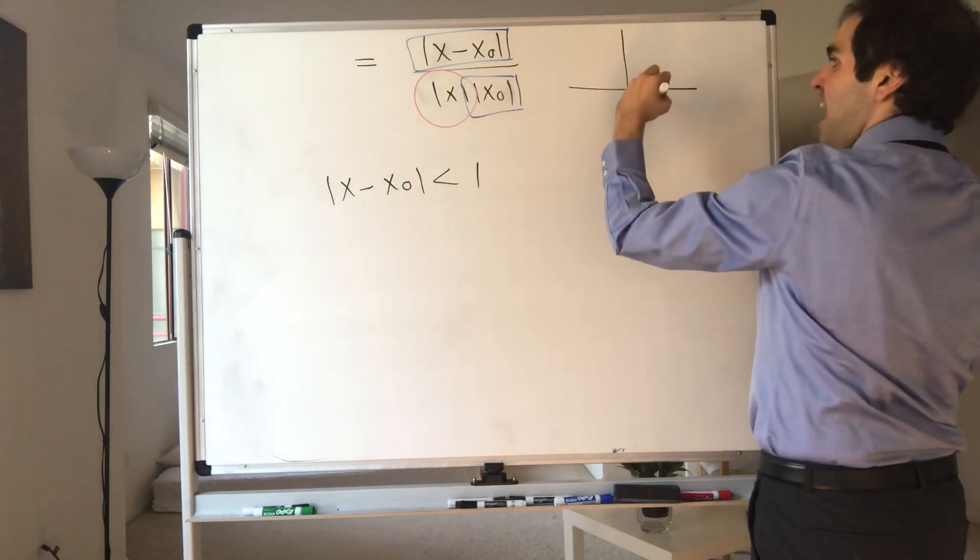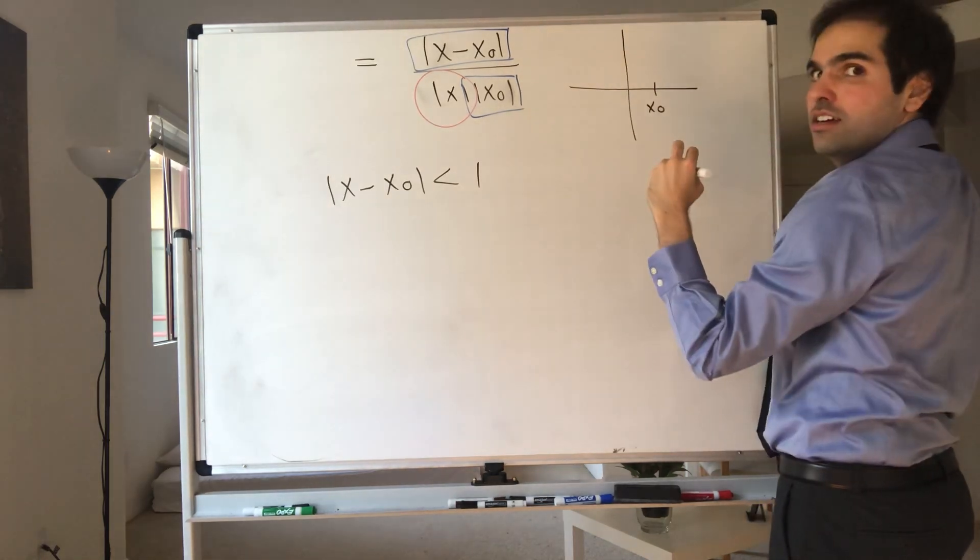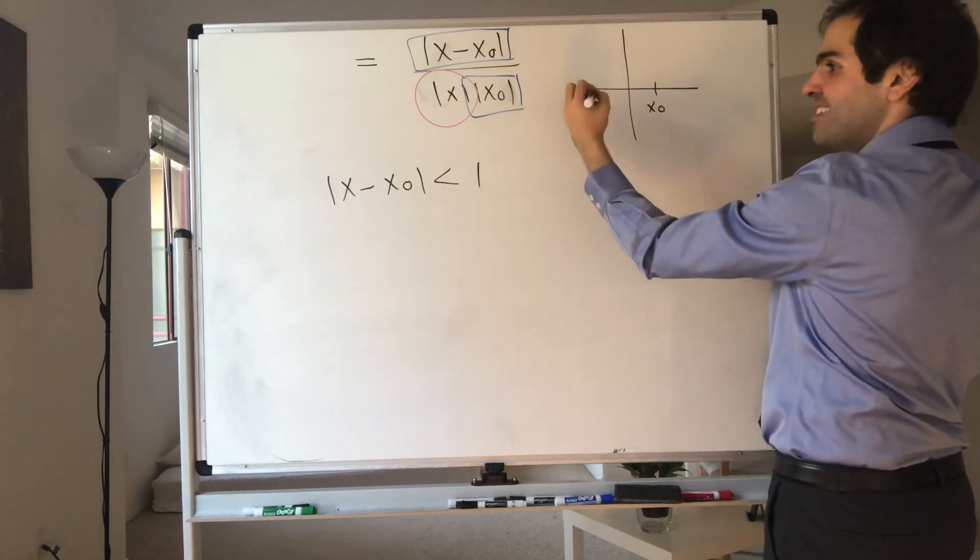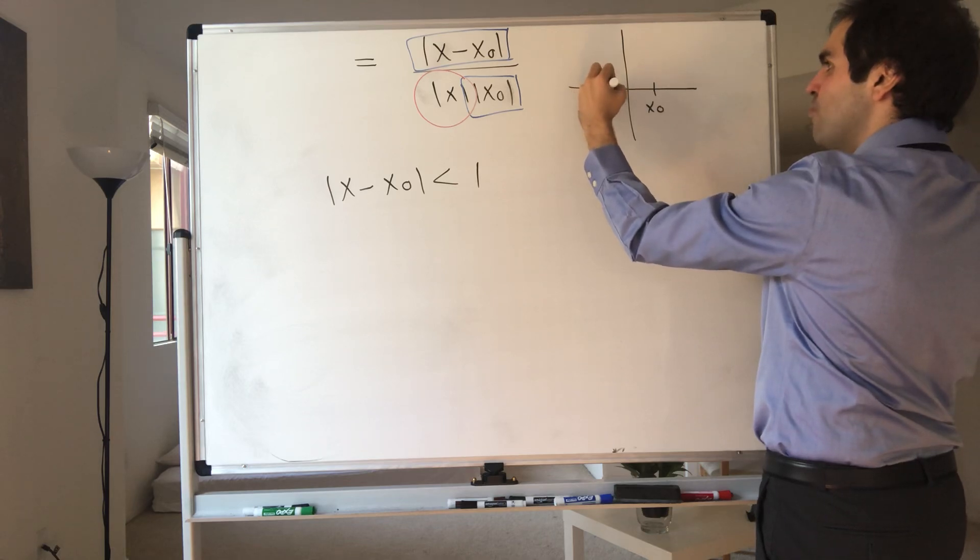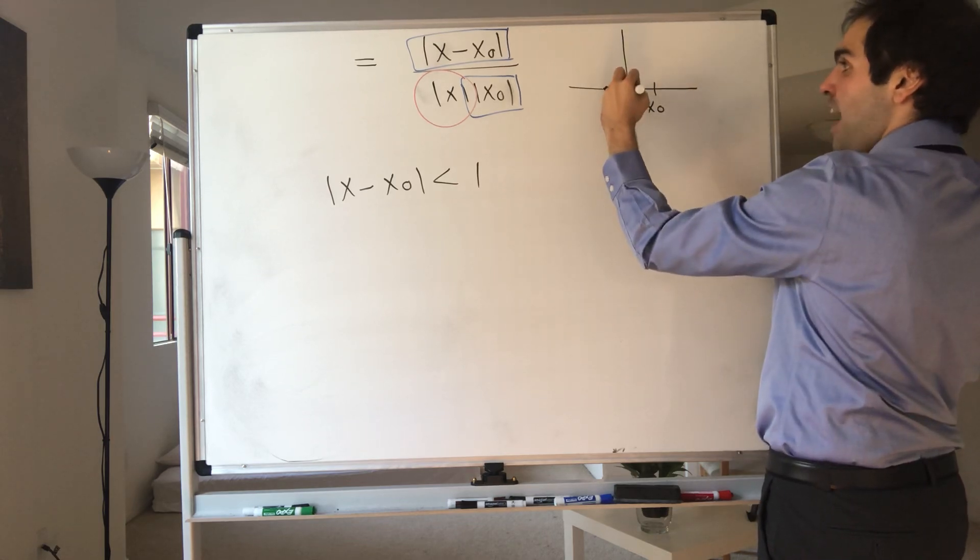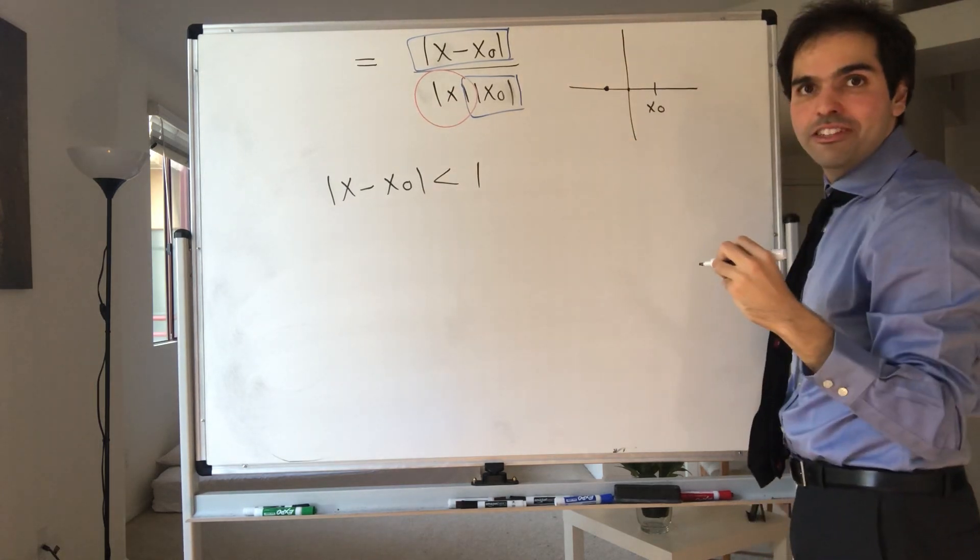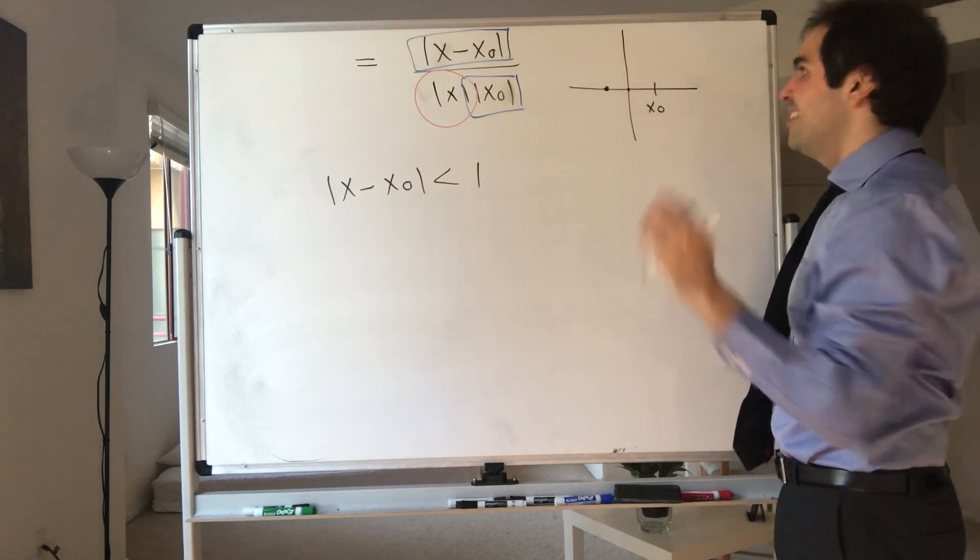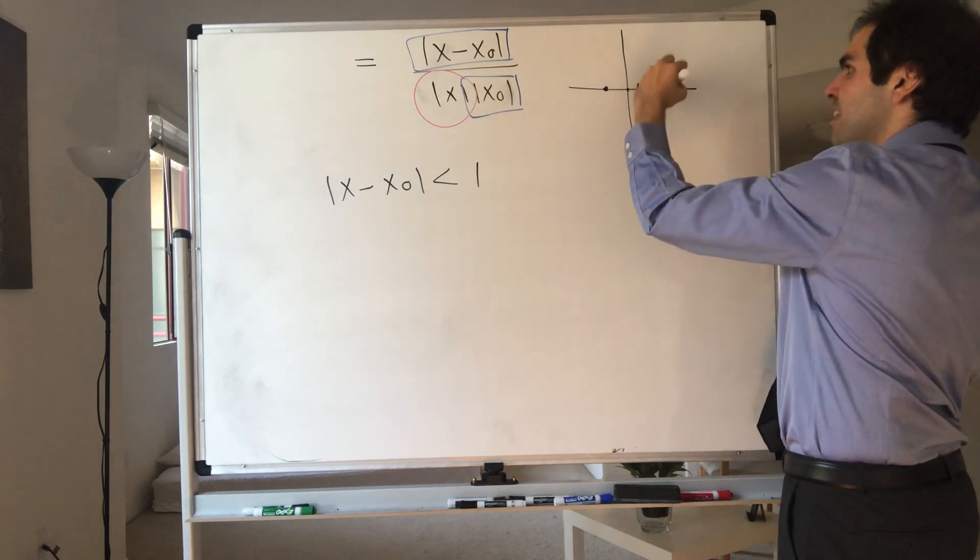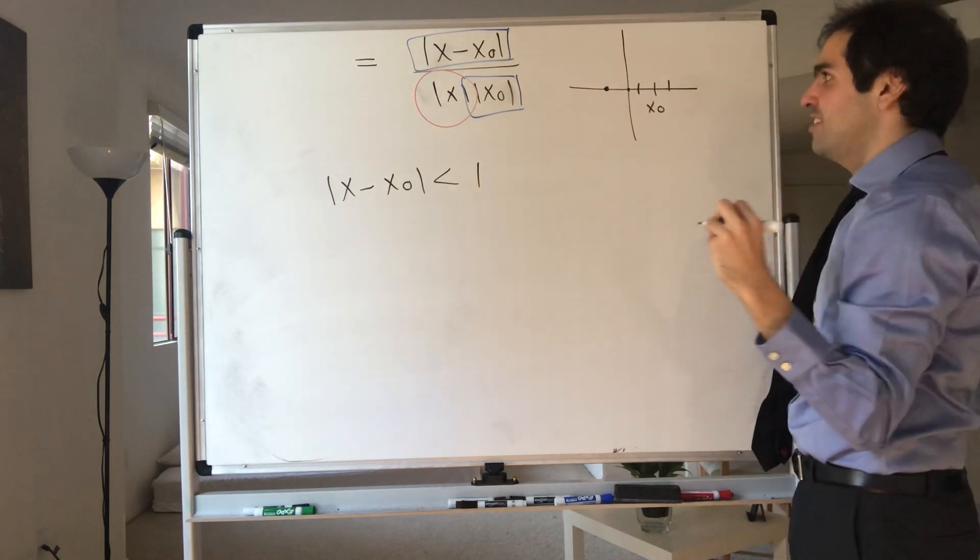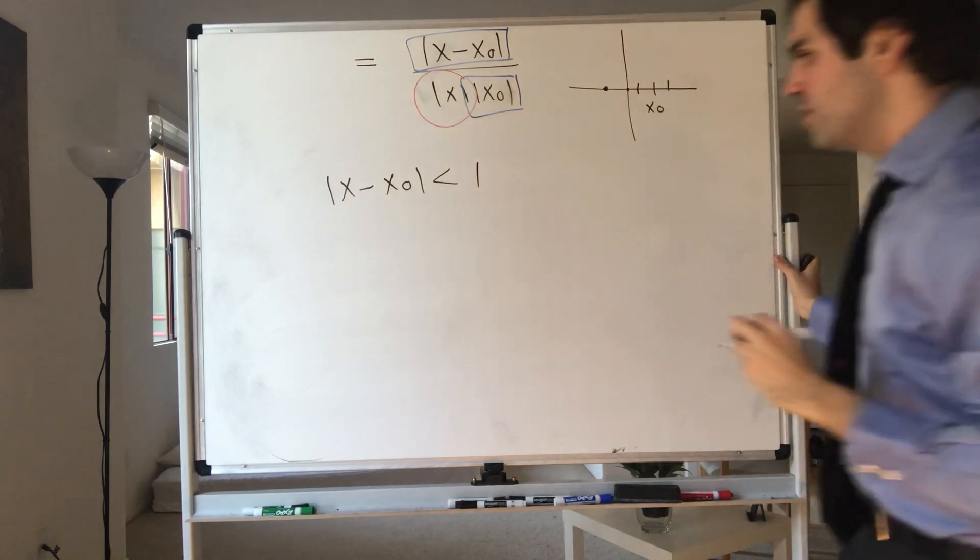Because before, we said absolute value of x minus absolute value of x naught, that's less than one, and then that was very good. The only issue is, let's say for instance x naught is one-half. Then, if x minus x naught is less than one, then there's a problem because x could be zero or could even be negative. And that's not what we want. What we really want is something that's very close to x naught.